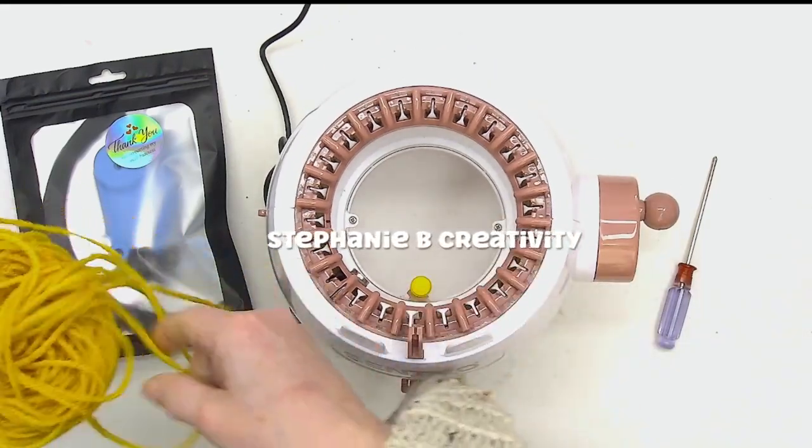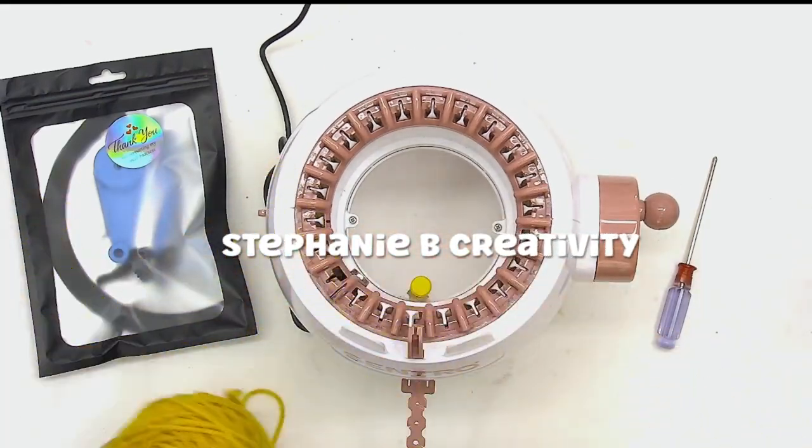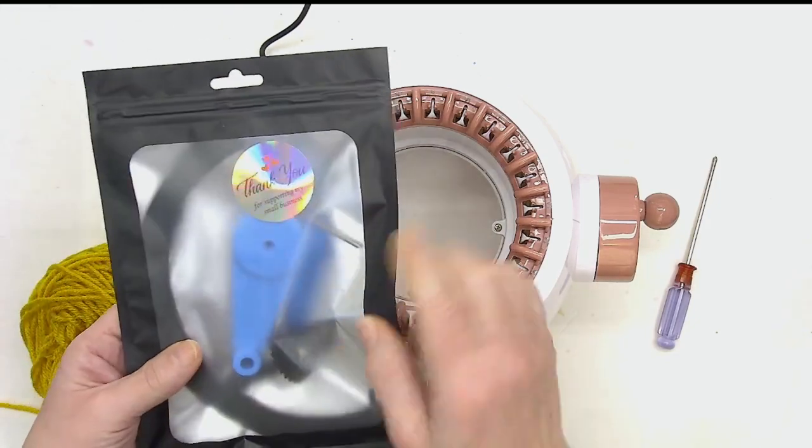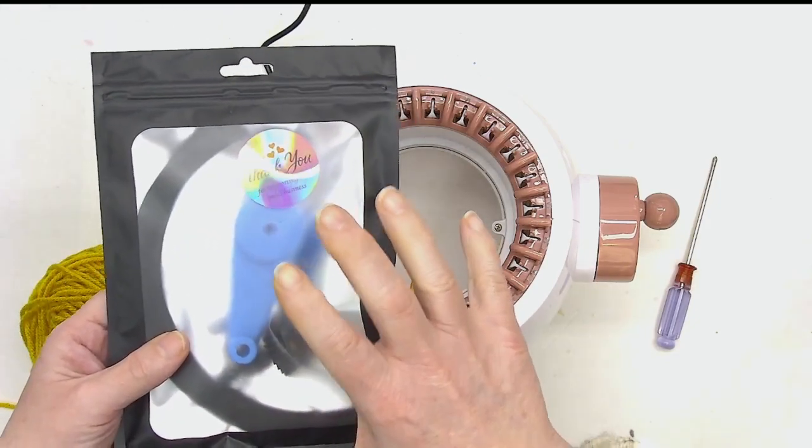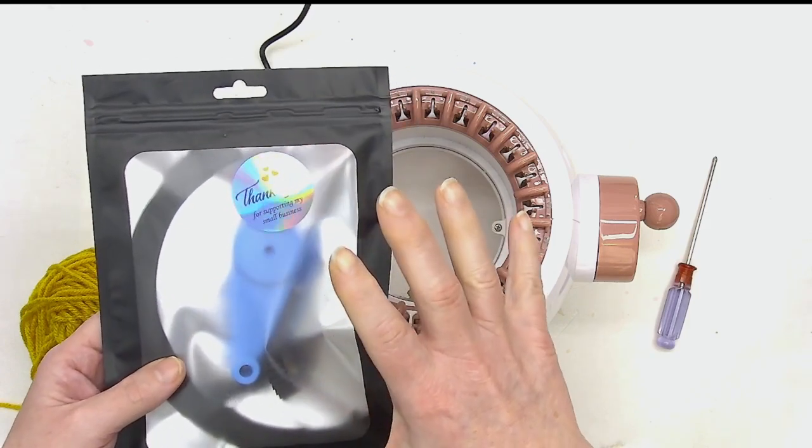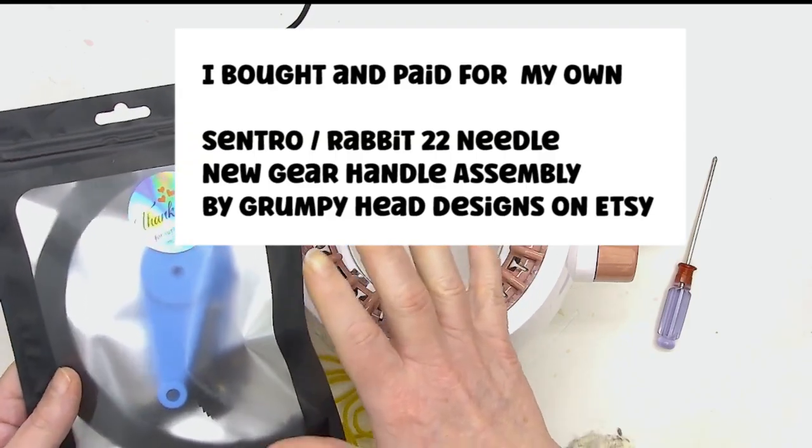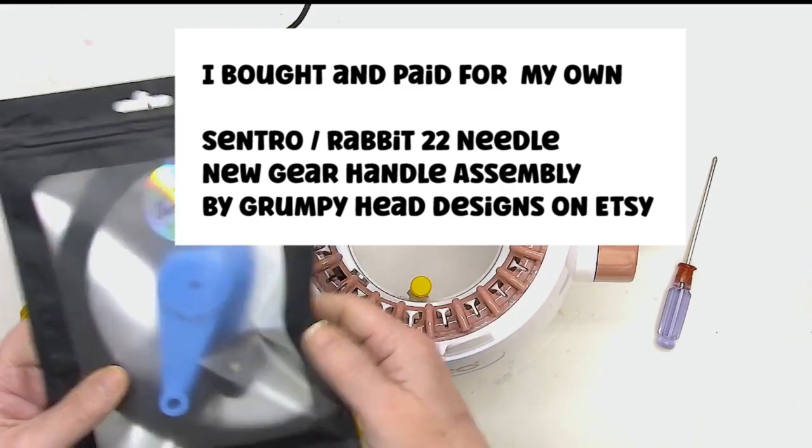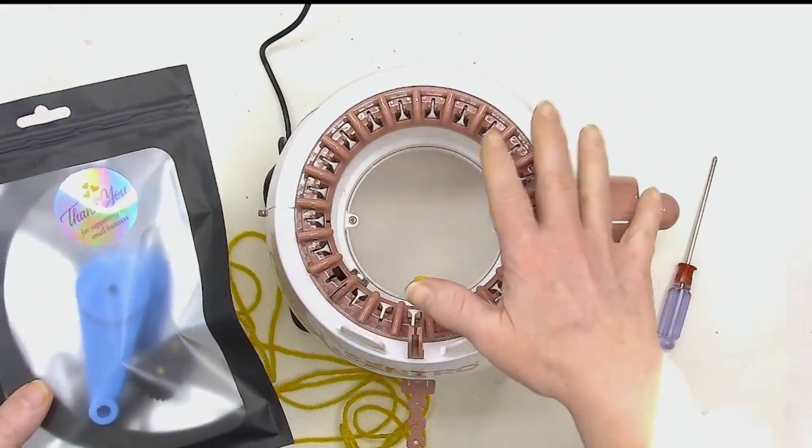This is Stephanie from Stephanie B Creativity and I just got the replacement gear set from Grumpy Head Designs. This is a kit to fix my Centro.